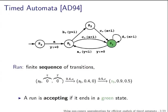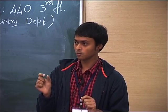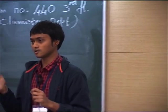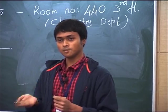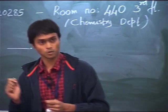You have a finite number of states — here S0, S1, S2, S3 are the states. You have some finite number of actions — here A, B, C, D are the actions. In addition you have a finite number of clocks; here X and Y are the clocks. The clocks are assumed to have value 0 at time t=0 and they increase at the same rate as time progresses.